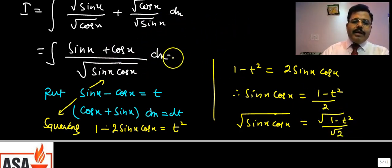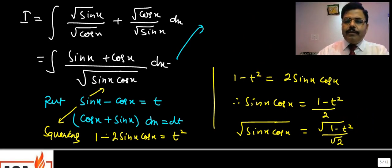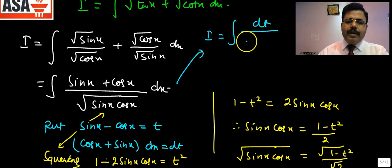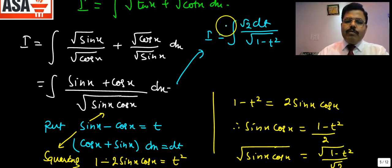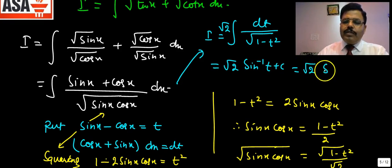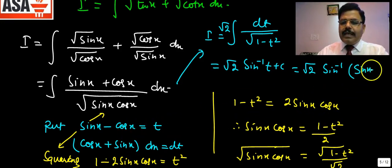The integration of 1/√(1−t²) is sin⁻¹t. So the answer is √2·sin⁻¹t + C = √2·sin⁻¹(sinx − cosx) + C. So I = √2·sin⁻¹(sinx − cosx) + C. This is one form of the answer.